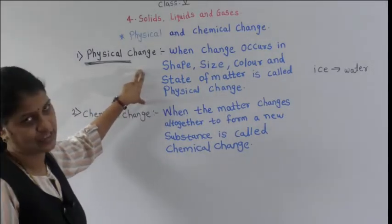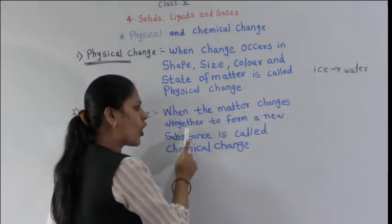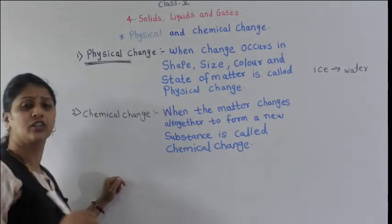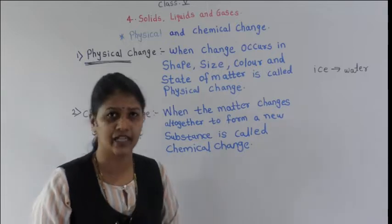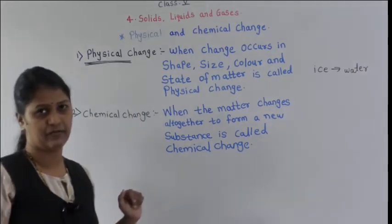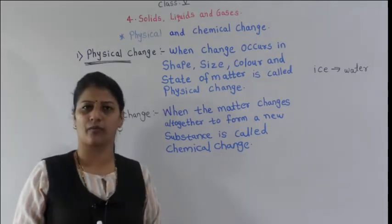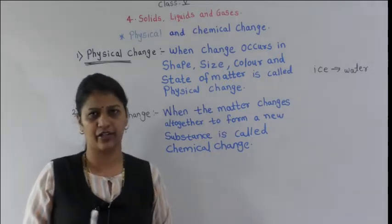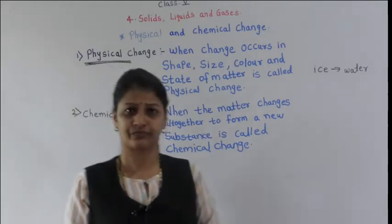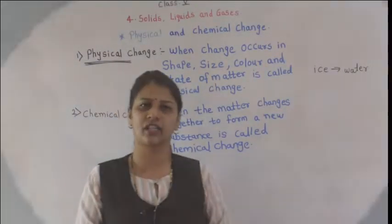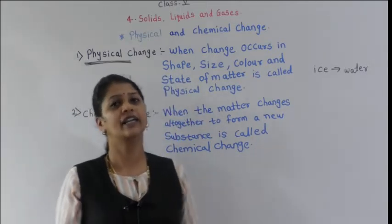Now the next is chemical change. When the matter changes altogether to form a new substance, it is called a chemical change. When I burn a paper, can I get that paper back again? No. The paper is converted into black ash, and we can't get the paper back from that ash — a new substance is formed. For example, making a chapati from wheat flour — once the chapati is made, can we make dough again from that chapati? No, so that is called a chemical change.